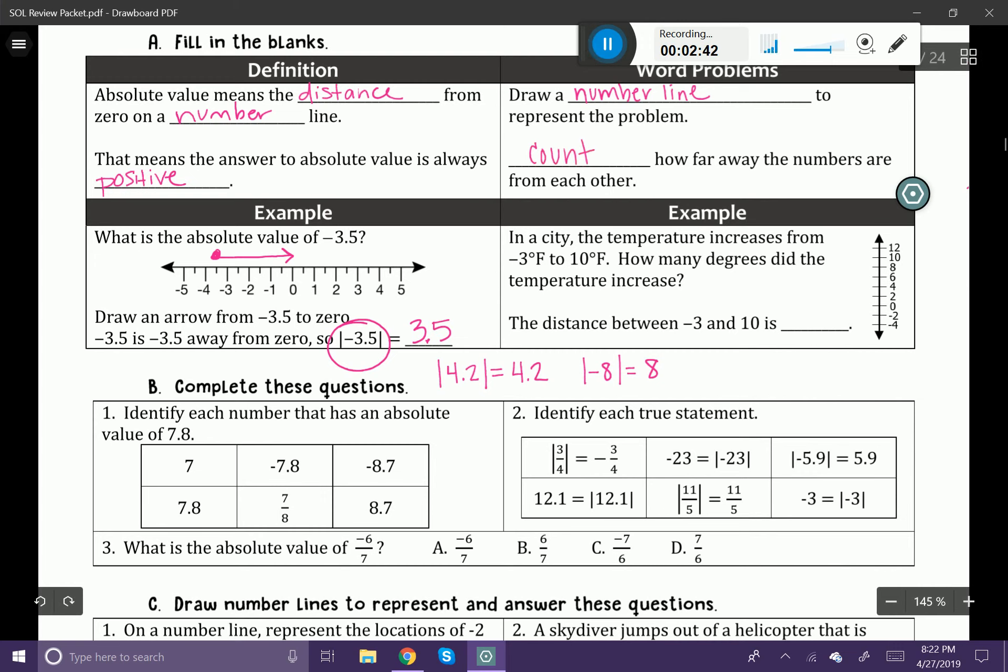Then what we want to do is count how far away the numbers are from each other. Let's take a look at an example. In a city, the temperature increases from negative 3 degrees Fahrenheit to 10 degrees Fahrenheit. How many degrees did the temperature increase? So we're looking for the distance between negative 3 and 10 on a number line.